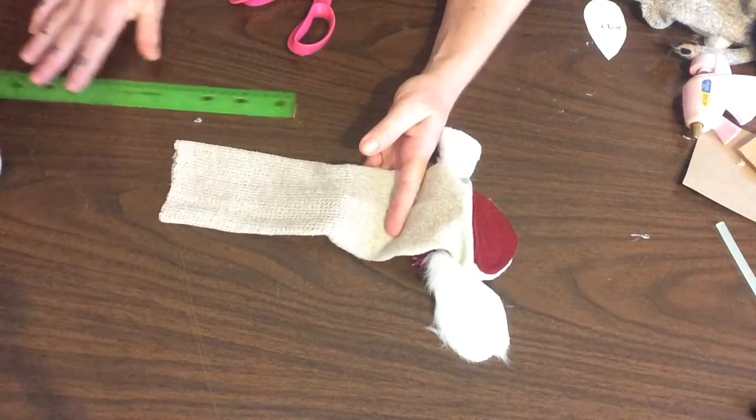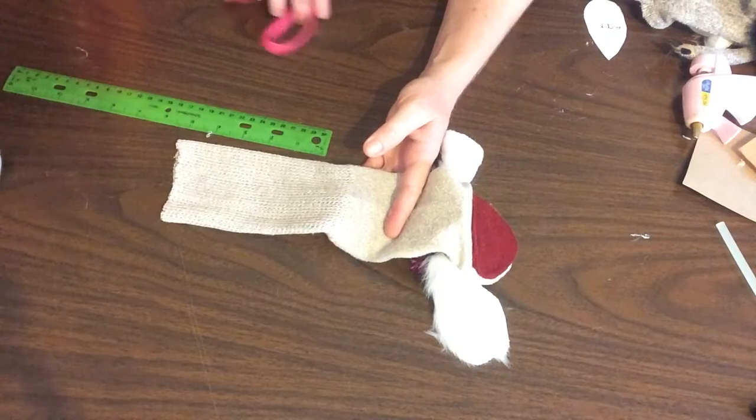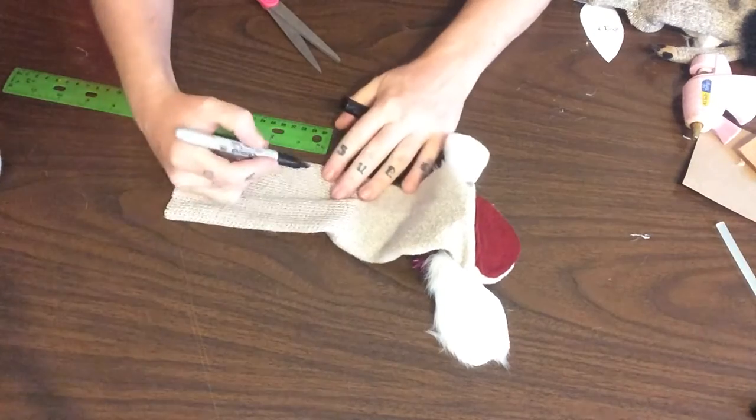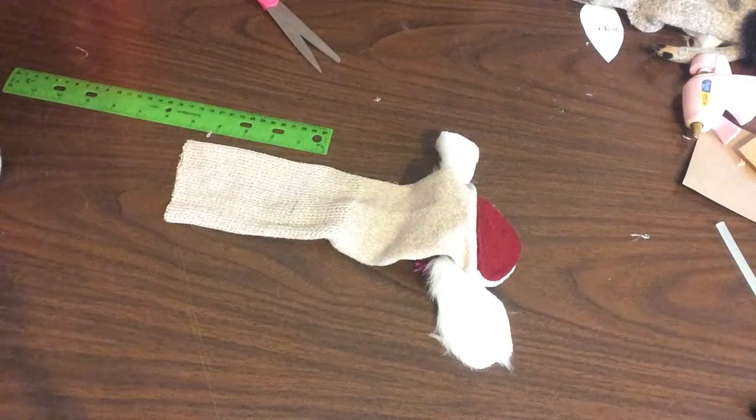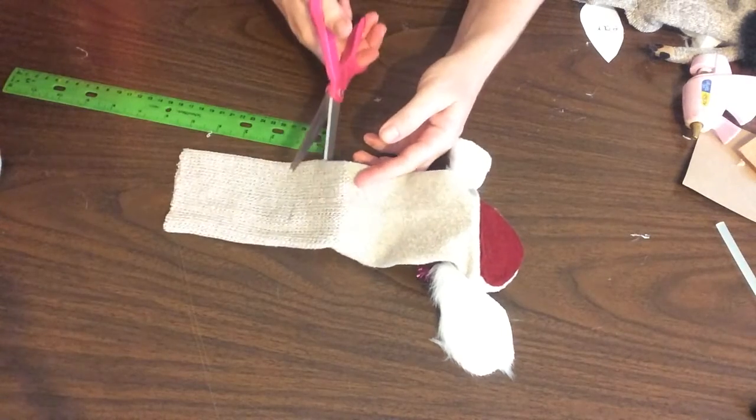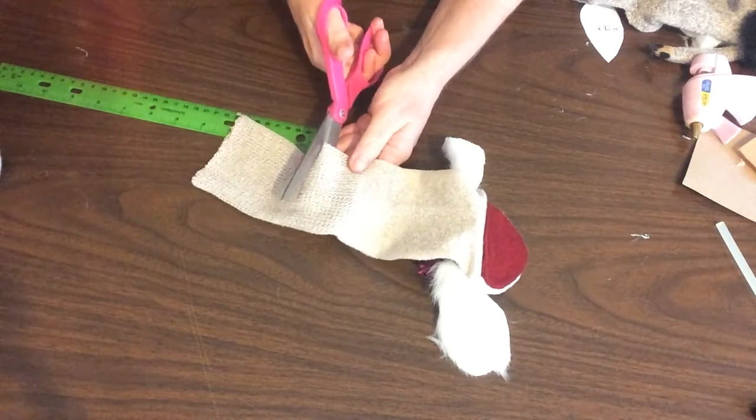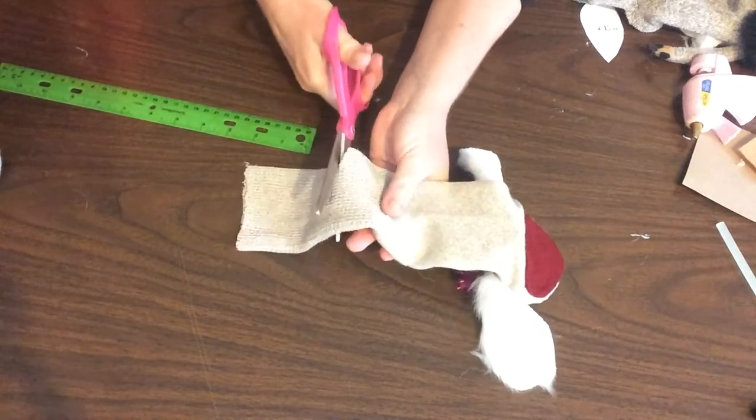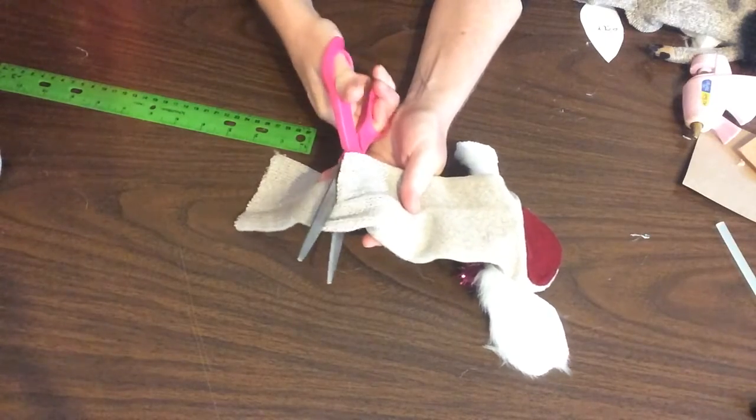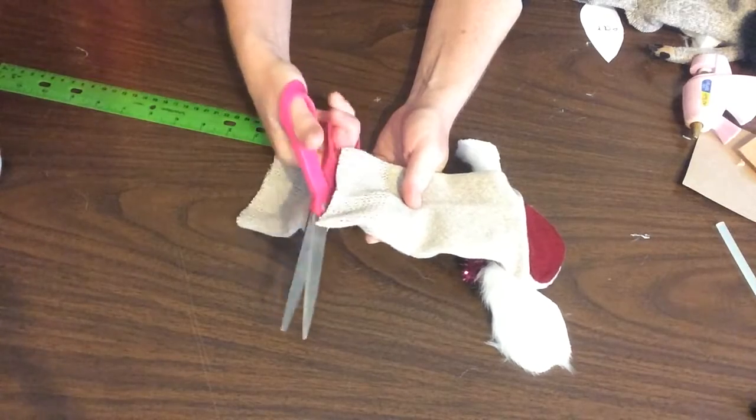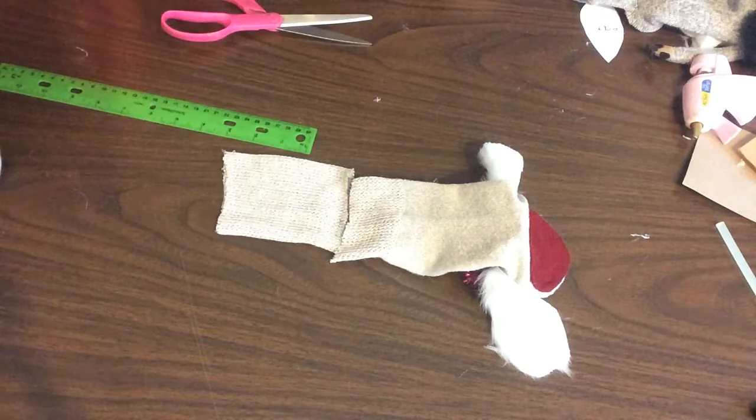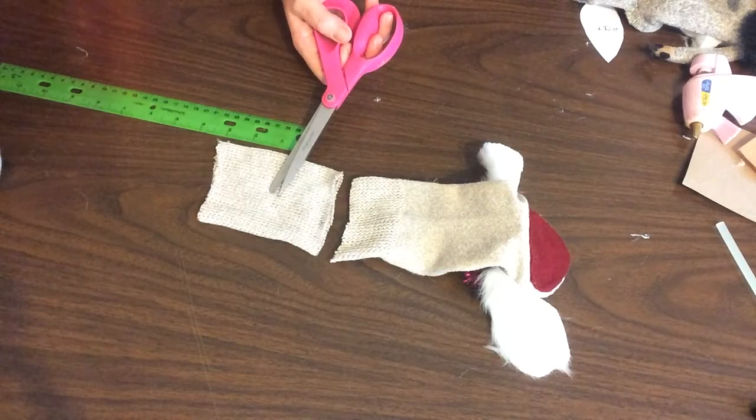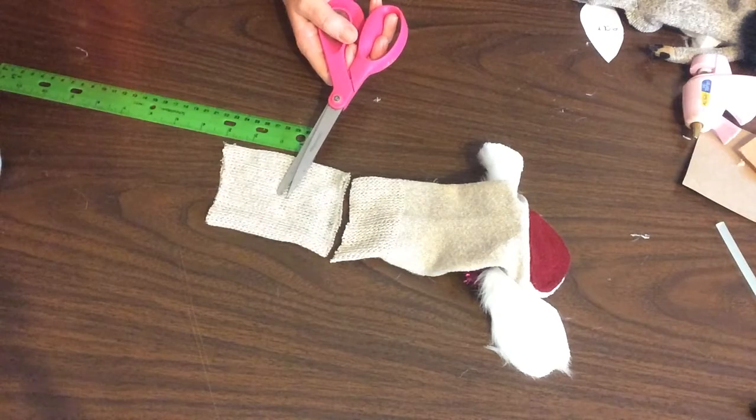And you can make sure that you use your marker if you need to. And just draw a line right across. Actually, let's go ahead and do that. Where you're going to cut a little light line to keep you on track. So there's our line. I can see it. I hope you can see it at home. And I'm going to go ahead and just cut that slowly and straight. So that will be my arms and my legs.